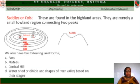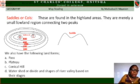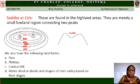Saddle or Col. These are found in highland areas. They are a lower land region connecting two peaks. From the map, you can see at the 500-meter contour that the land breaks, and you have one peak on one side and another peak on the other. The gap between the two peaks is what is called a saddle or col.